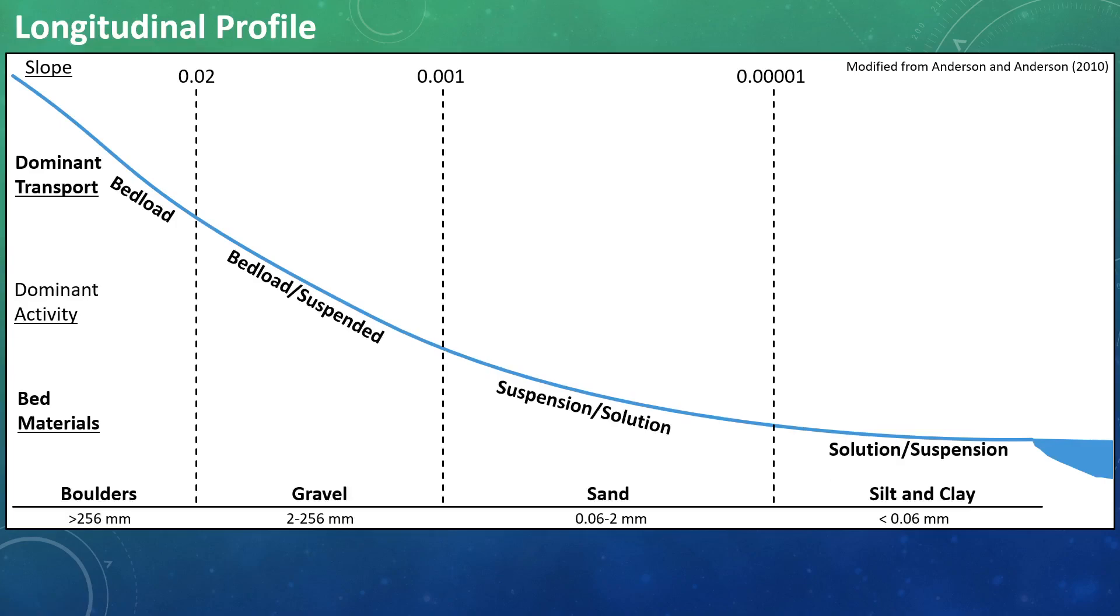Dominant transport mechanisms reflect these distinct reaches well, which also reflects the grain size that is typical of each reach. The headwater regions are dominated by boulder-sized grain sizes with roughly somewhere over 256 millimeters, with bed load as the dominant method of transport.